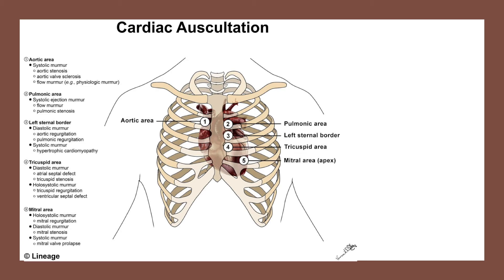Last but not least is the heart murmur. There are five different cardiac auscultation points on the heart, highlighted on screen. The first point — the aortic area or right base — is where aortic stenosis is best heard. Number two is the pulmonic area where pulmonary stenosis is best heard. The left sternal border, also known as Erb's point, is where most heart sounds can be heard generally. Four is the tricuspid valve area and five is the mitral valve area, also known as the apex.